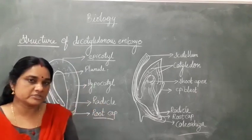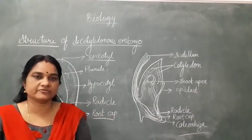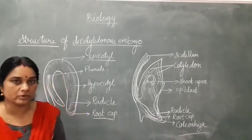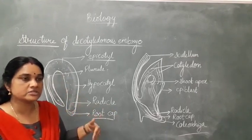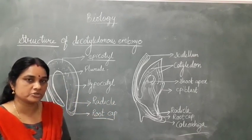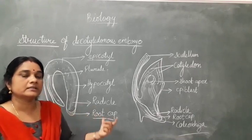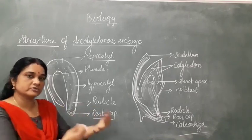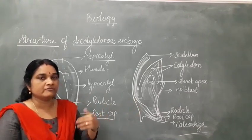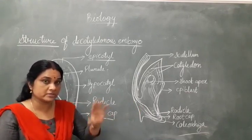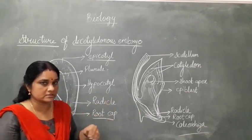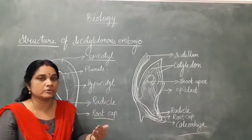In the last part, we studied about the post-fertilization events — how the embryo is formed. We started with double fertilization and the different stages of embryo development: the pro-embryo stage, two-cell stage, the apical cell and basal cell, then the globular embryo leading to the heart-shaped embryo where cotyledons start appearing, and finally the mature embryo with a radicle and plumule containing meristematic tissues. We also studied the cotyledons — the structure of a mature embryo of a dicot plant.